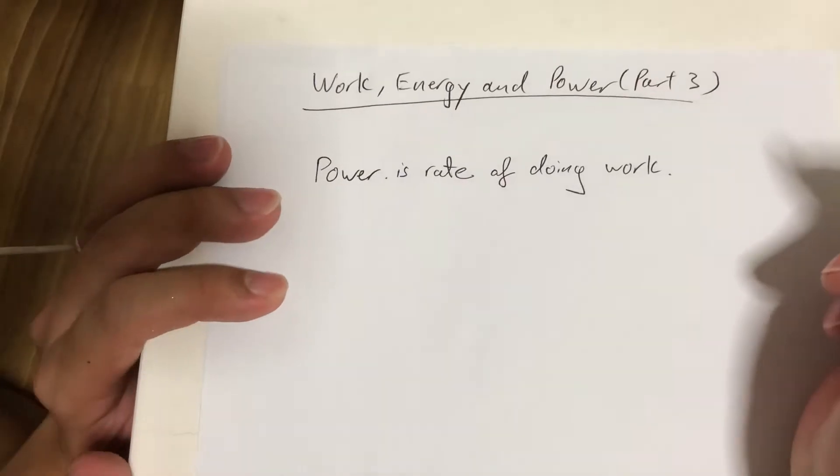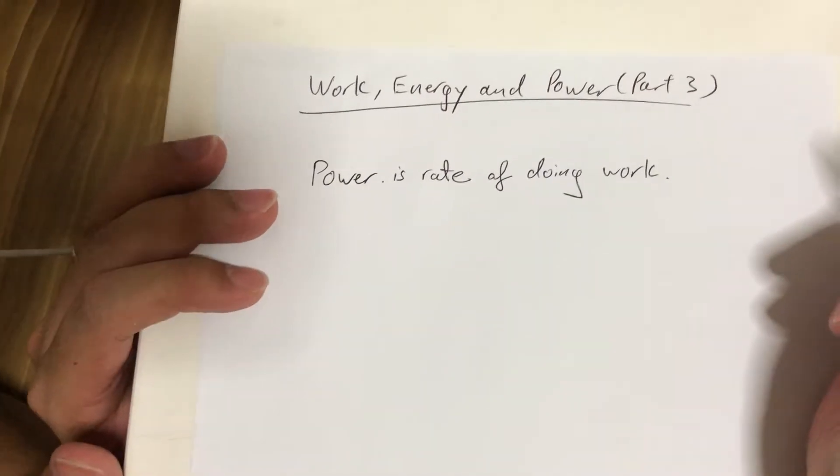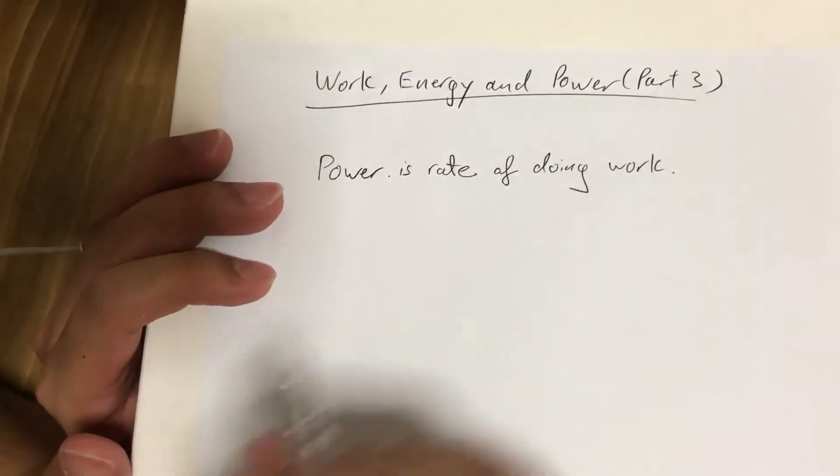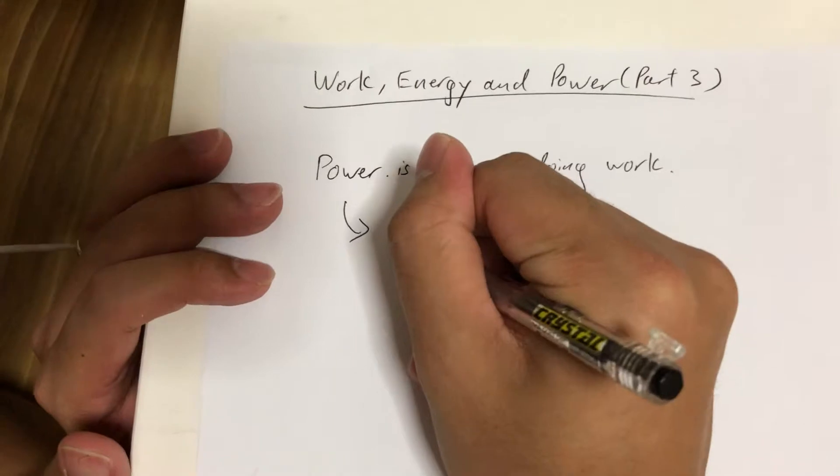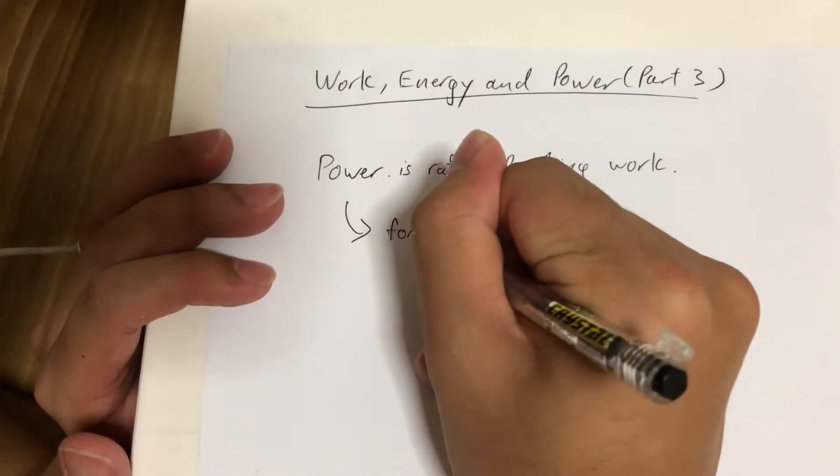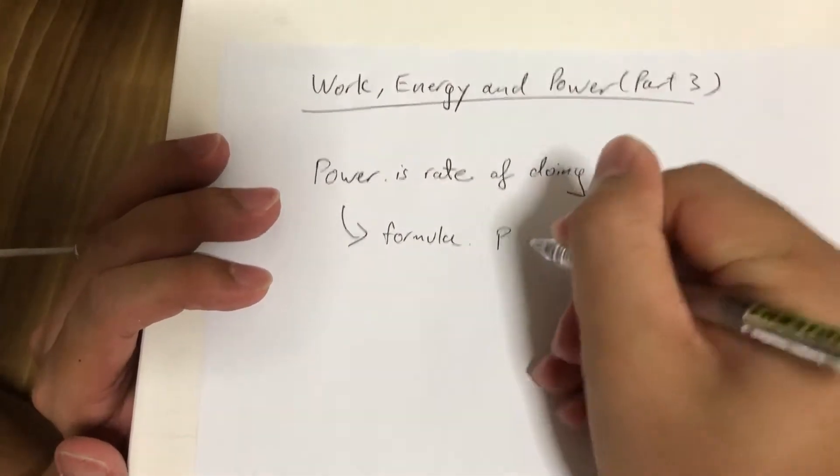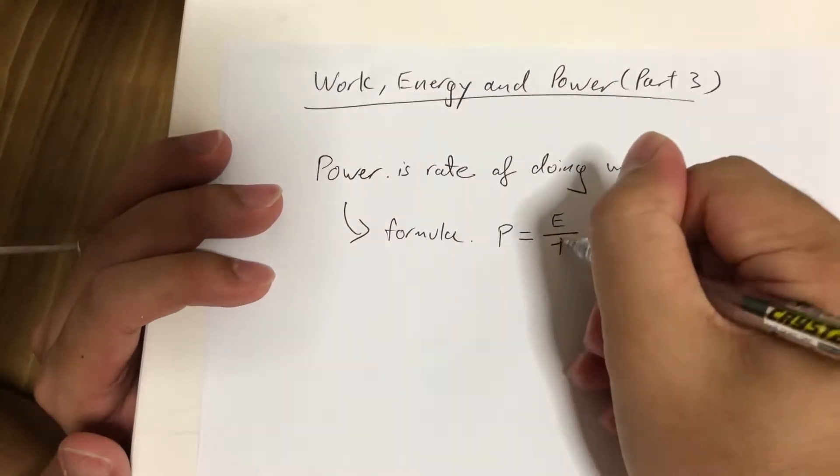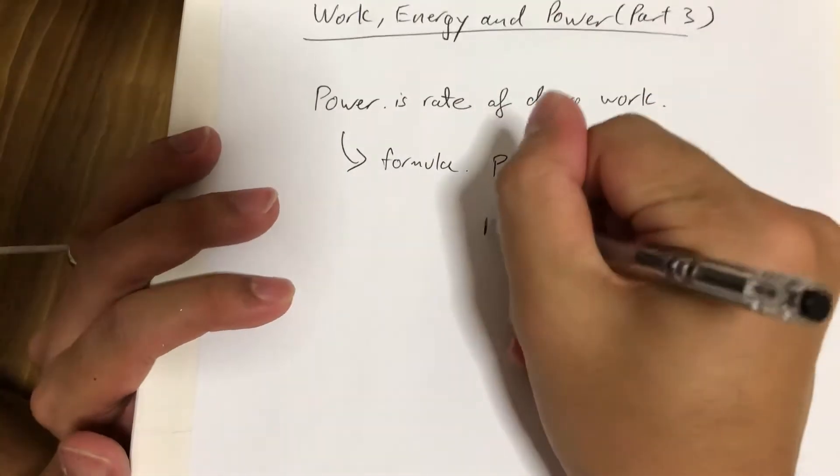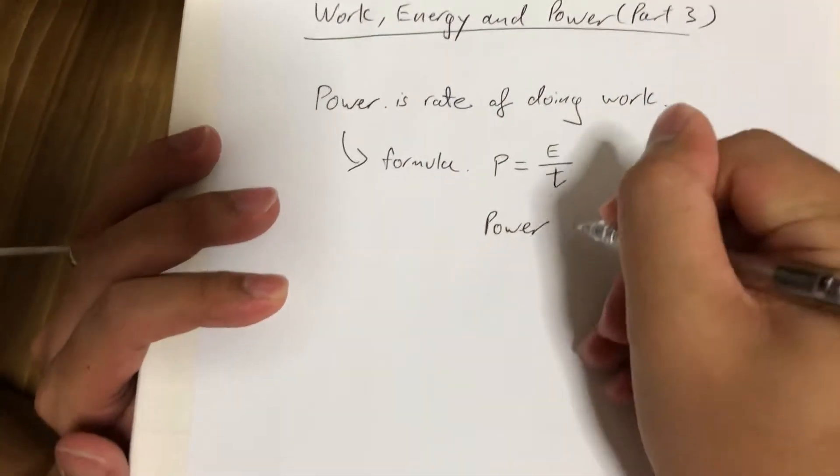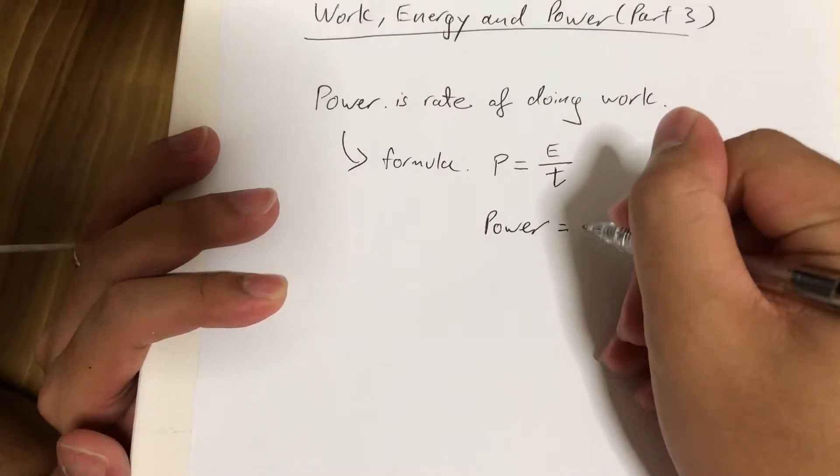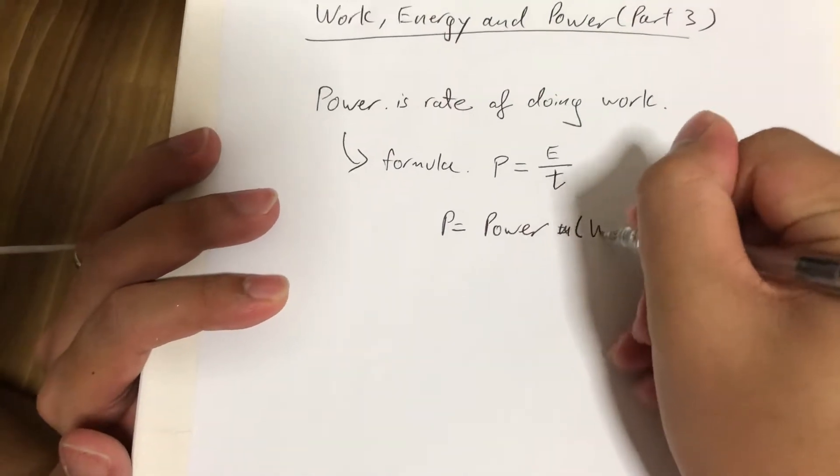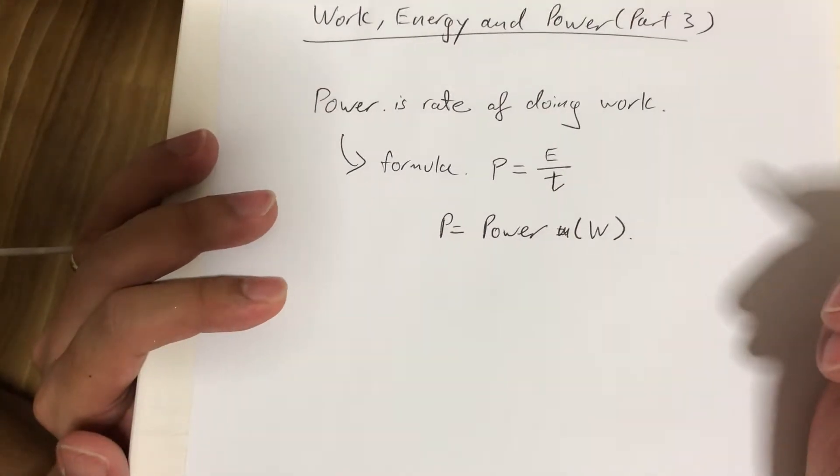Well, it sounds like a very complicated concept, but it's not really complicated. So what do we mean by rate of doing work? Power is actually given by the formula P equals E divided by t.